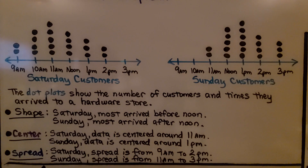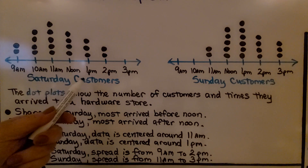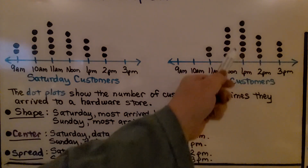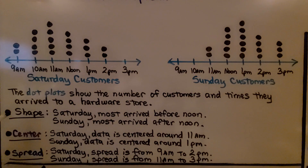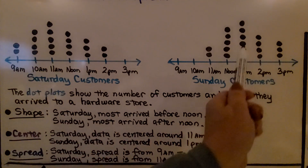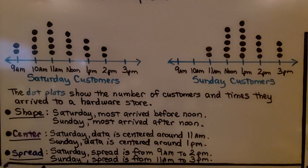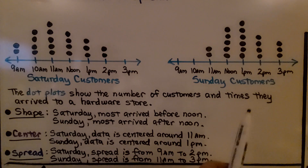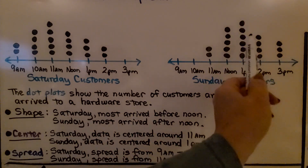Here we have two dot plots. The dot plots show the number of customers and times they arrived at a hardware store. We can see the Saturday customers and how many arrived at what time, and here are the Sunday customers and how many arrived at what time. The shape of Saturday shows most arrived before noon — you can see there are more dots before noon. On Sunday, most arrived after noon. For the center, Saturday's data is centered around 11 a.m., and Sunday's data is centered around 1 p.m.